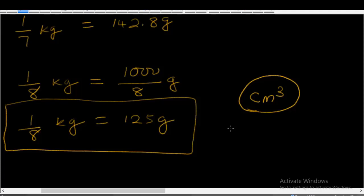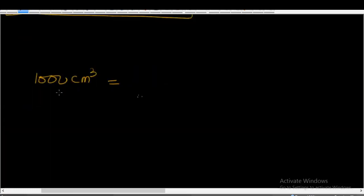But when you leave the classroom — for example, when you go to the market, you will find that centimeter cube is not used. If you go to the waterboard, the city water supply, and ask what quantity of water they supply, they might say something like 2,000 cubic liters of water was supplied to the community in the last one month, and you may find this unit confusing. So let me clarify: 1,000 cm³ is equal to 1,000 milliliters.